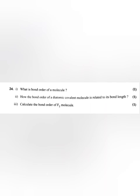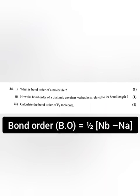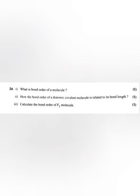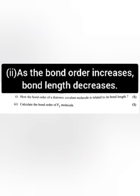Question 24: What is bond order of a molecule? Answer: Bond order is equal to half into nb minus na. How is the bond order of a diatomic covalent molecule related to its bond length? Answer: As the bond order increases, bond length decreases.